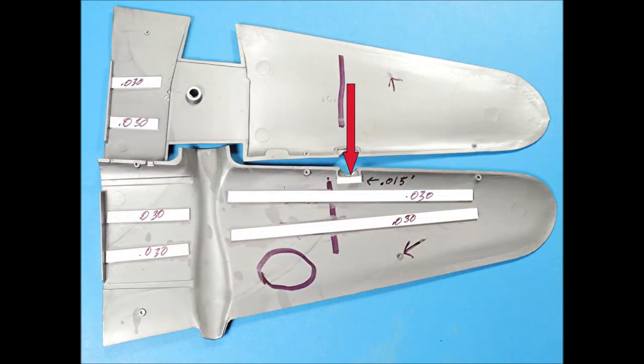Wherever possible you should reinforce your wings. This is especially important with tricycle landing gear kits that are going to have a lot of weight in the nose.